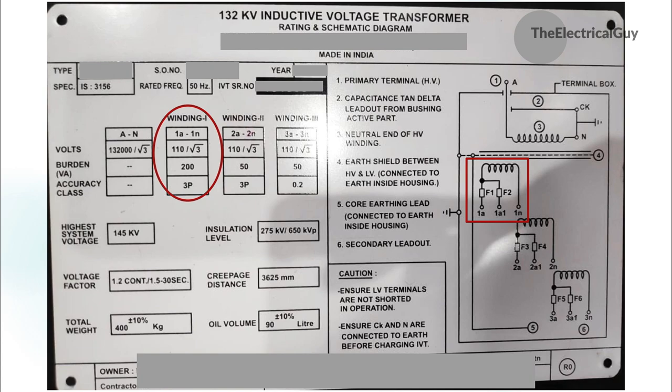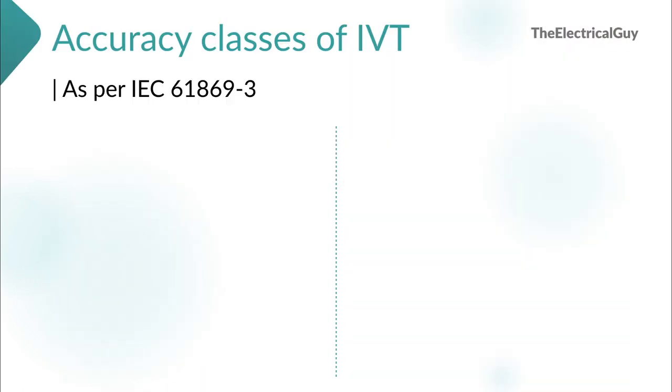For the first winding, the rated burden is 200VA, indicating you can connect up to 200VA across this winding. It is not good practice to specify a higher burden than required, as this will increase the weight of the IVT. Moving on to the fourth row of the secondary column — accuracy class.